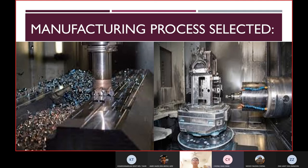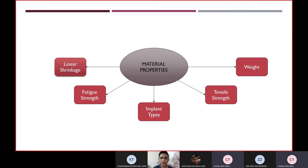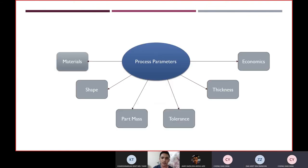For the material properties, they have a part which have linear shrinkage, fracture strength, implant types, tensile strength, and weight. Then the process parameters will have six, which are material, shape, fat mass, tolerance, thickness, and economy.